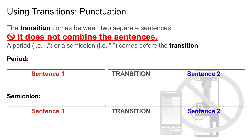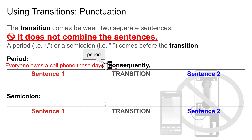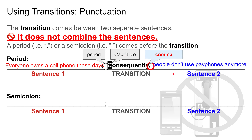If you use a period: 'Everyone owns a cell phone. Consequently, people don't use pay phones.' With a period, you capitalize the transition and add a comma after it. If you use a semicolon: 'Everyone owns a cell phone; consequently, people don't use pay phones anymore.' With a semicolon, do not capitalize the transition, but you still need the comma after it.